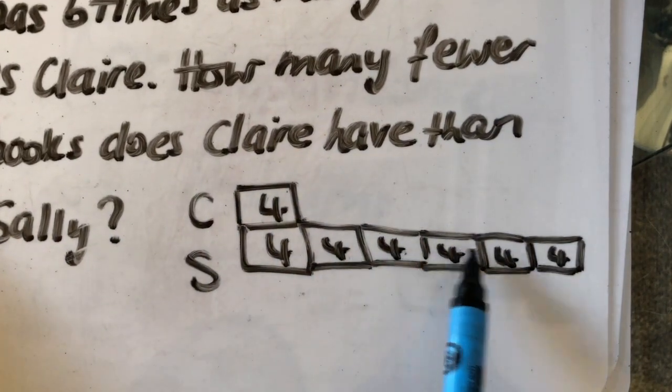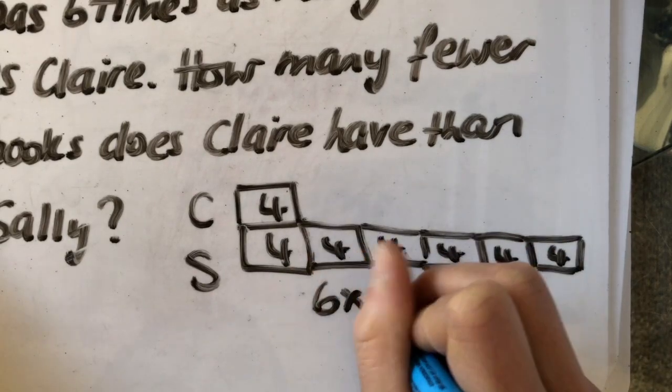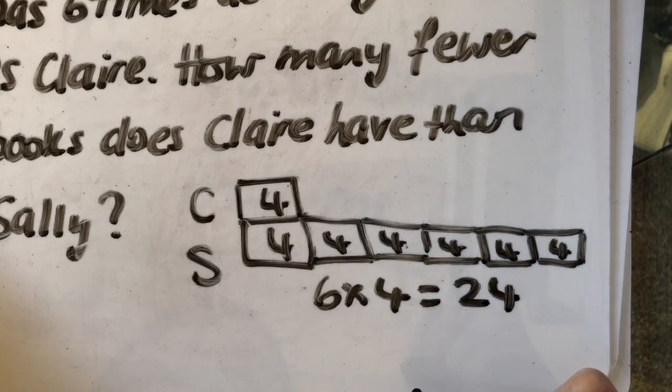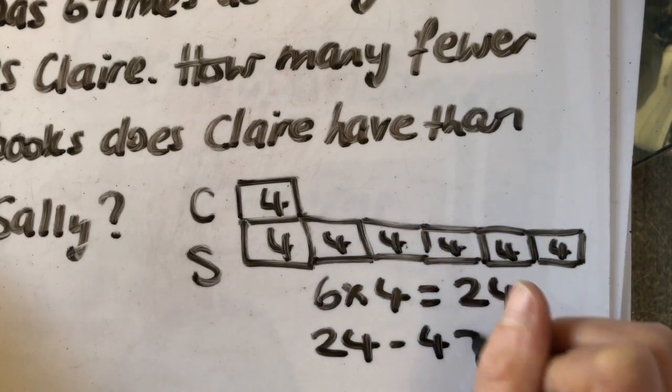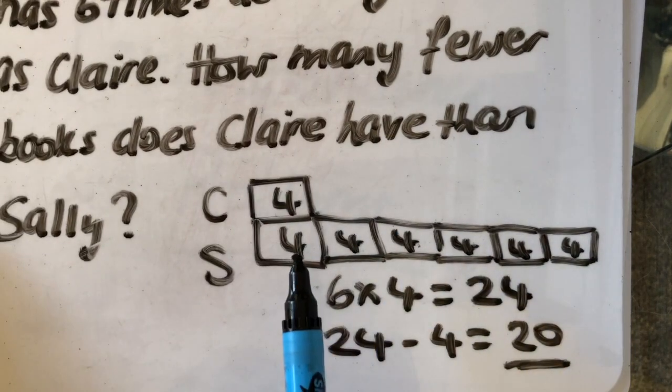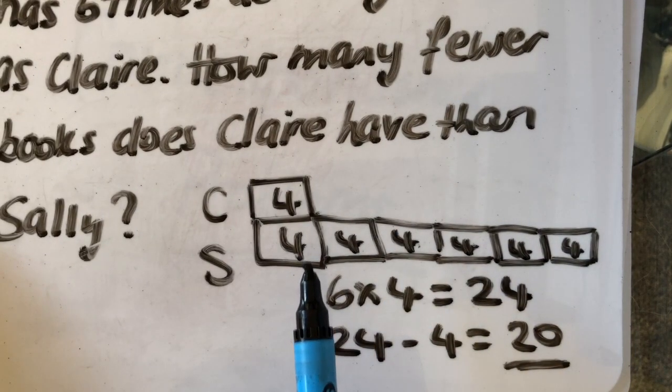Well, I can see Sally's got 1, 2, 3, 4, 5, 6. So she's got 6 times 4, which gives me 24. And then Claire's got 4. So 24 take away 4 gives me 20. So the answer is 20. Claire has 20 fewer books than Sally.